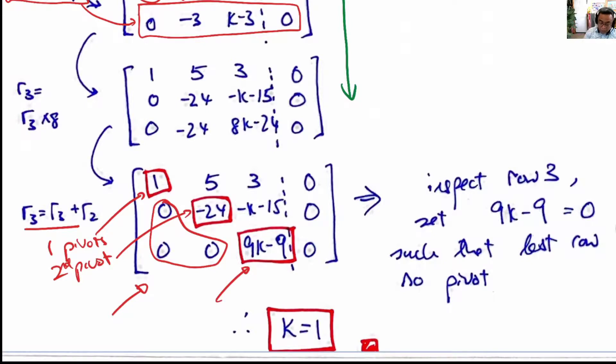To make the solution have infinite solutions, this pivot must be zero. To make it zero, we can set k equals to 1, making it zero equals to zero.